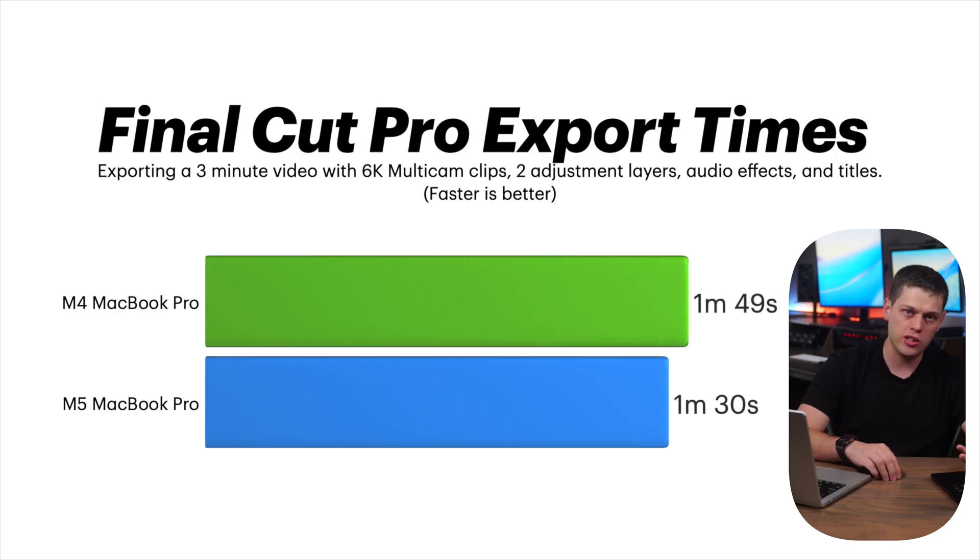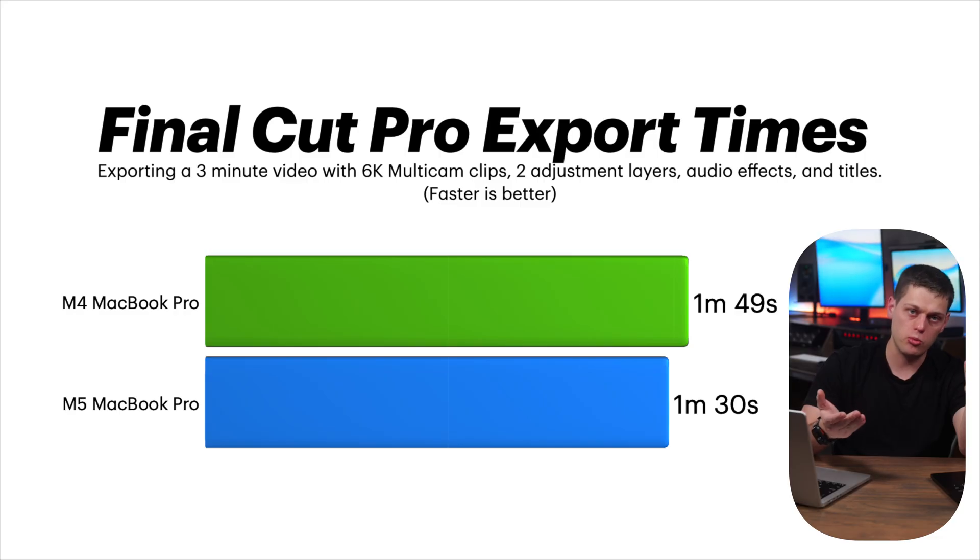The next test was the video exporting test. I created a three-minute project file with a couple of adjustment layers, some titles, effects, and audio effects. On the M4 it took a minute and 49 seconds to export, and on the M5 it went down to a minute and 30 seconds — a small performance boost. Just running the software and doing day-to-day video editing, I didn't really notice either computer feeling much faster. The M5 only really shows its improvements when the computer is actively processing things, and those subtle gains will save you time in the long run.